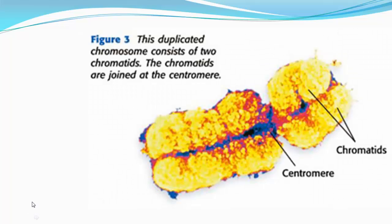A duplicated chromosome looks X-shaped, with the DNA fully condensed into rod-like structures. The centromere is in the center, and each side is an exact copy of the other. Each individual copy is called a chromatid, and together they are called sister chromatids.